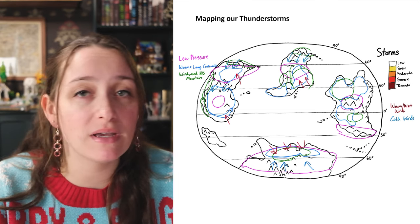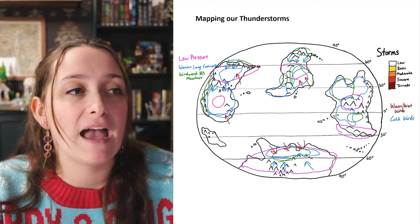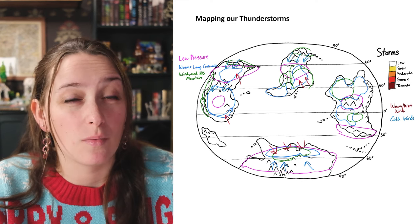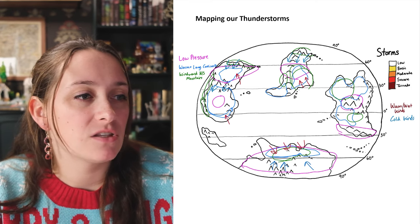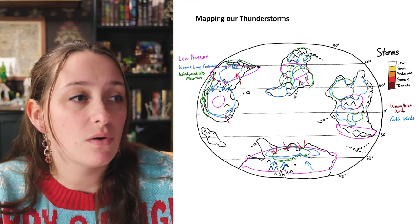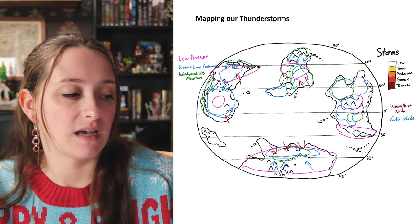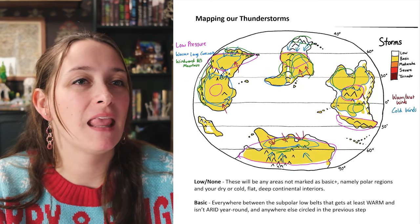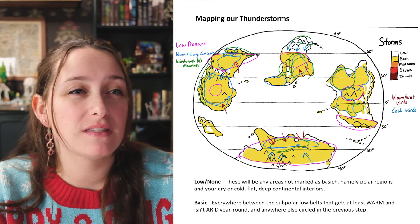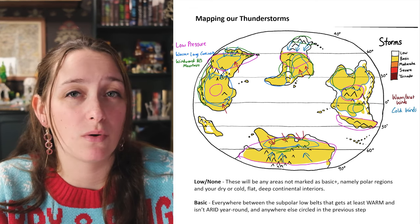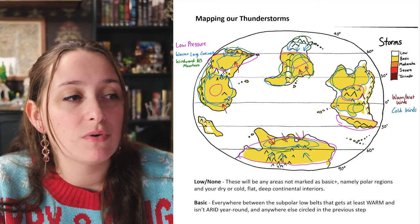On the map I have cold winds mostly coming from the polar end and warm winds coming from the equatorial side. Now we can map the chance of summer thunderstorms. I use a scale with five levels — low and none have no color or markings. We build it up similarly to how we did precipitation, where each effect increases the likelihood and severity. Low or no chance applies to polar regions, dry or cold flat deep continental interiors. Basic chance covers everything between your subpolar low belts that gets at least warm and is arid year-round, and anywhere circled in the previous step.